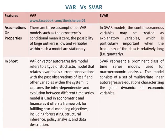There are three assumptions of VAR models: the error term's conditional mean is zero, the possibility of large outliers is low, and variables within such a model are stationary. Whereas, in SVAR models, the contemporaneous variables may be treated as explanatory variables, which is particularly important when the frequency of the data is relatively long, that is, quarterly.